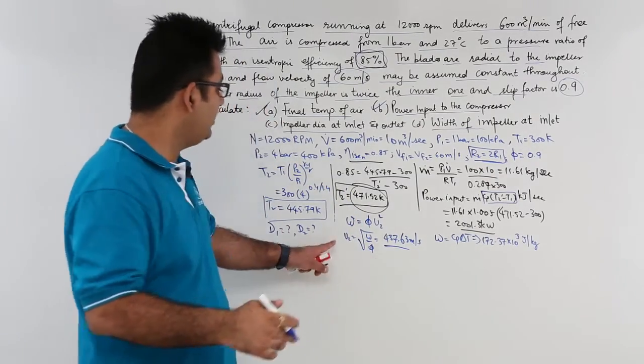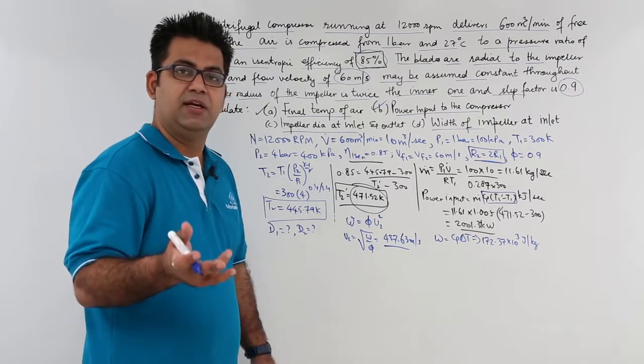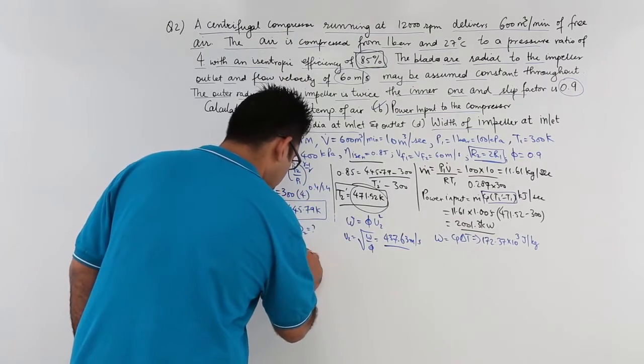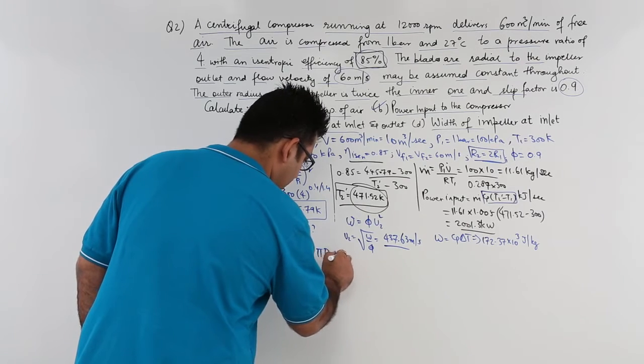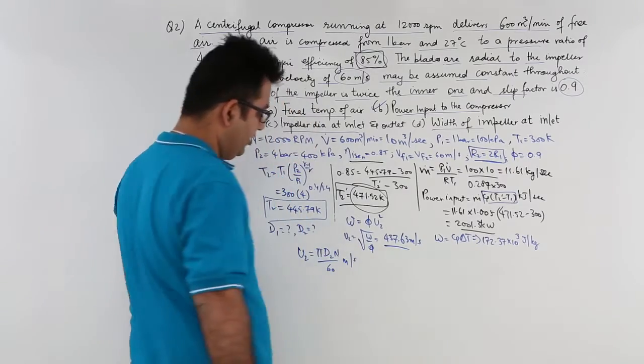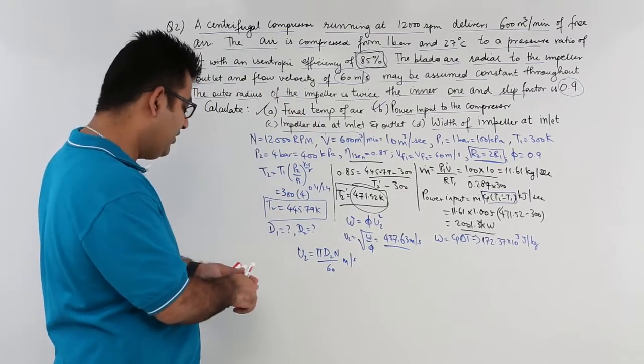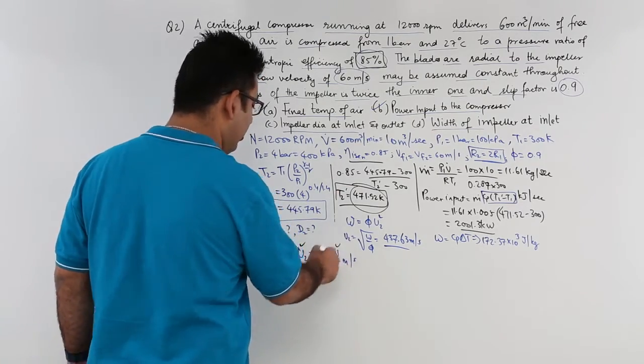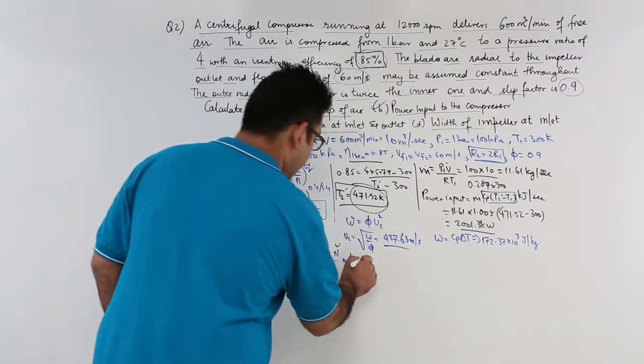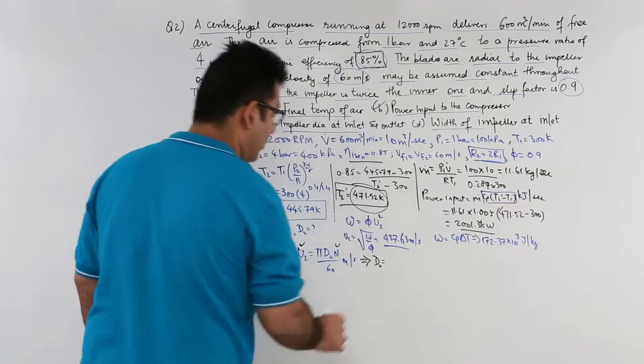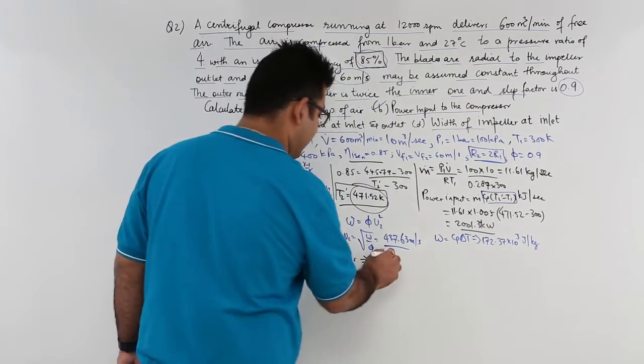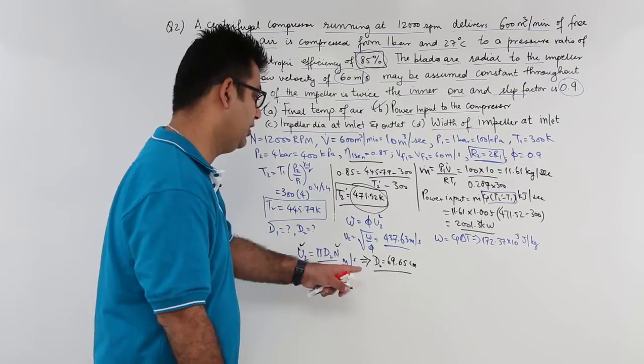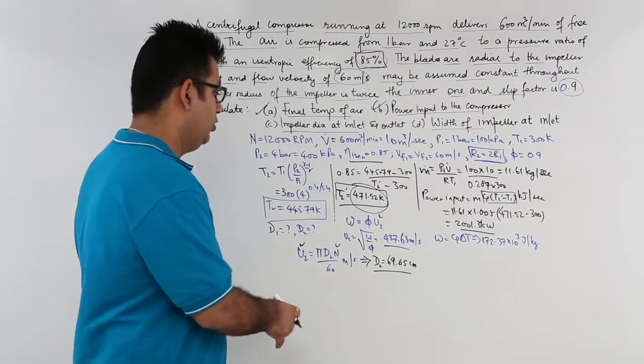Why did we find this out? Because once you have u2, u2 is nothing but omega r2. So you can find d2 from there. So u2 is equal to pi into d2 into n upon 60 meters per second. So from here you know the value of u2, you know the value of n. So d2 can be easily found out. So d2 from here would come out to be approximately 69.65 centimeters. You have to convert from meters to centimeters because it will be 0.0069, not a very good value to handle.